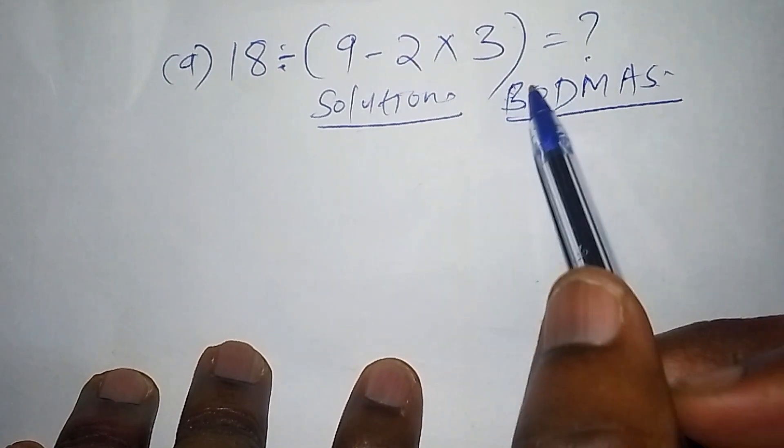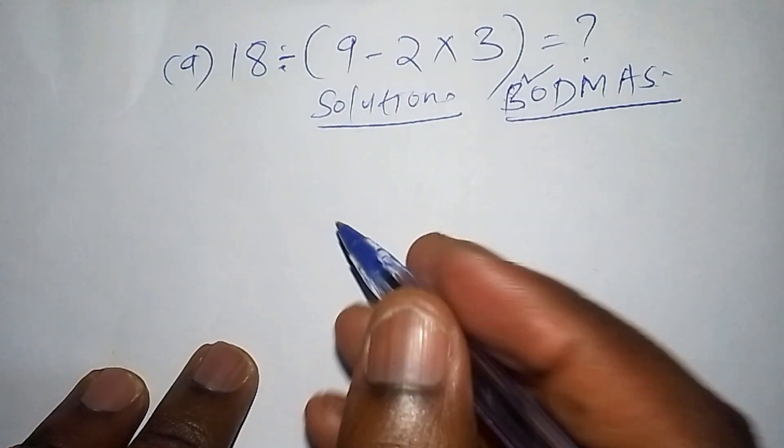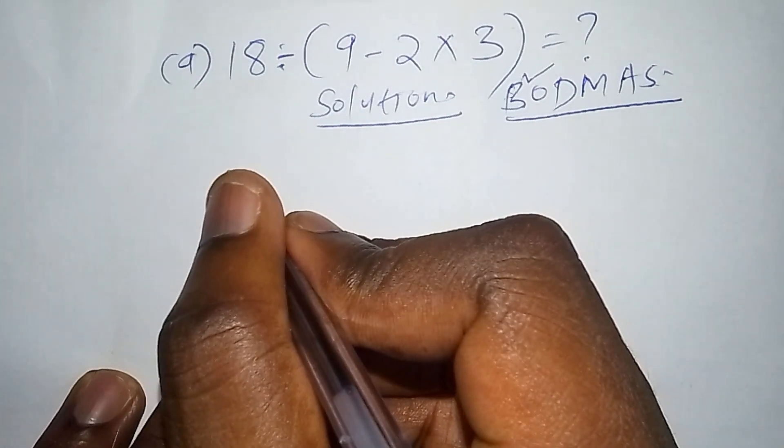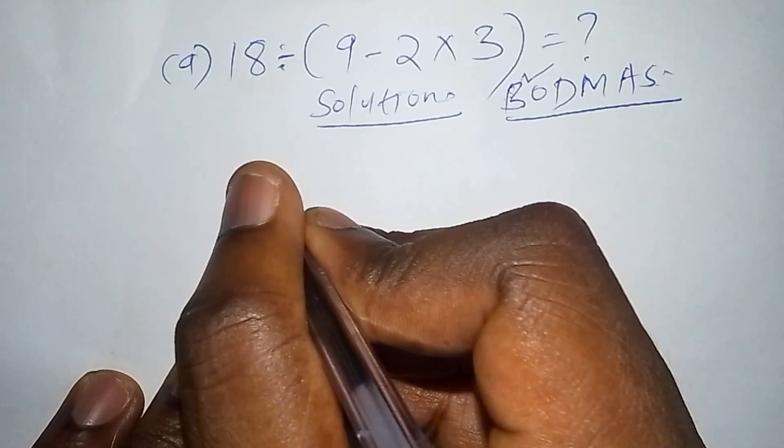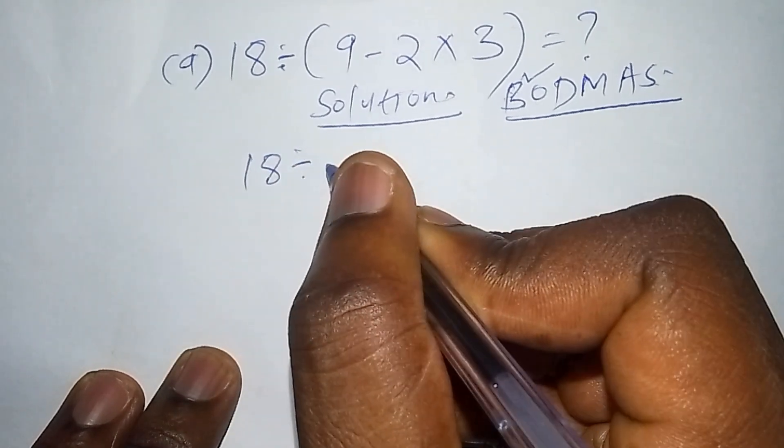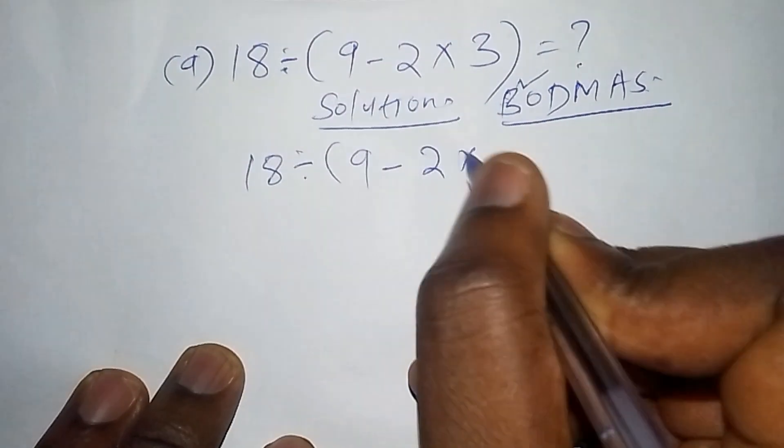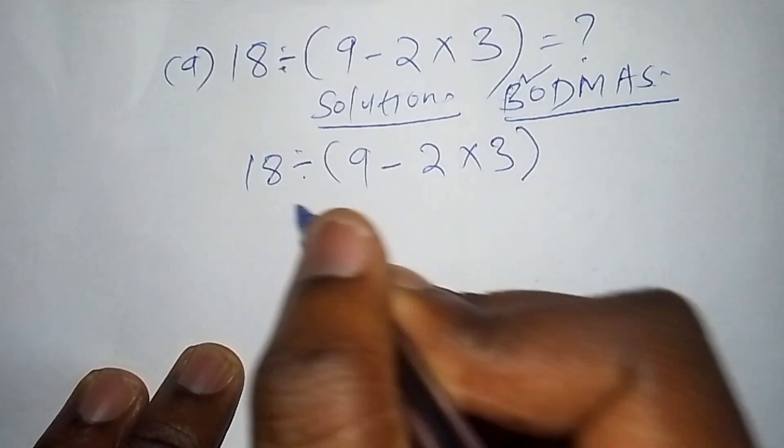So it is important for us to work out the number inside the bracket. So here we go. The first step, we write what we want to work out. We have 18 divide by, into bracket, 9 subtract from 2 multiply by 3, then close the bracket.